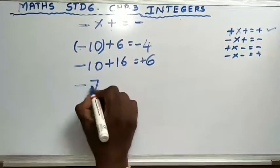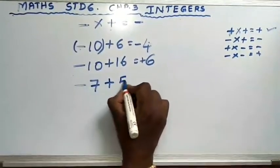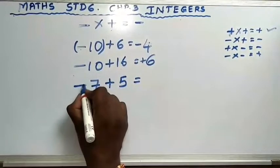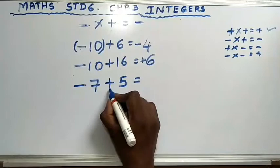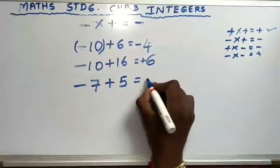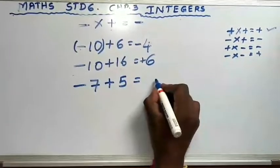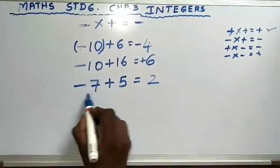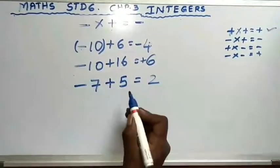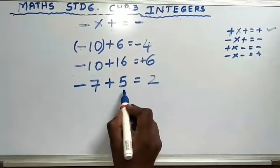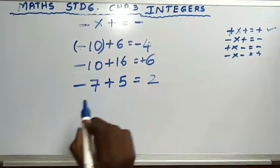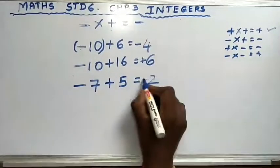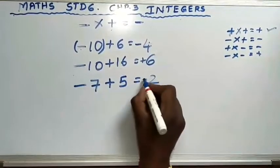Let me give more examples. Minus 7 plus 5: left side negative, right side positive, so subtract. 7 minus 5 is 2. Which is the greatest number — 7 or 5? 7 is the greatest number, and 7 has a negative sign, so write negative: minus 2.